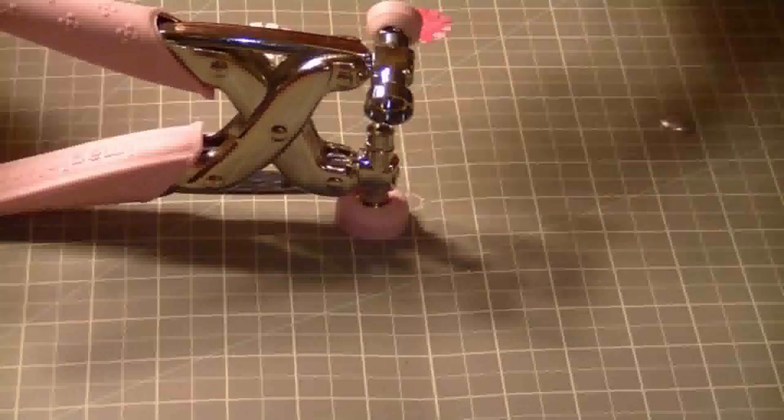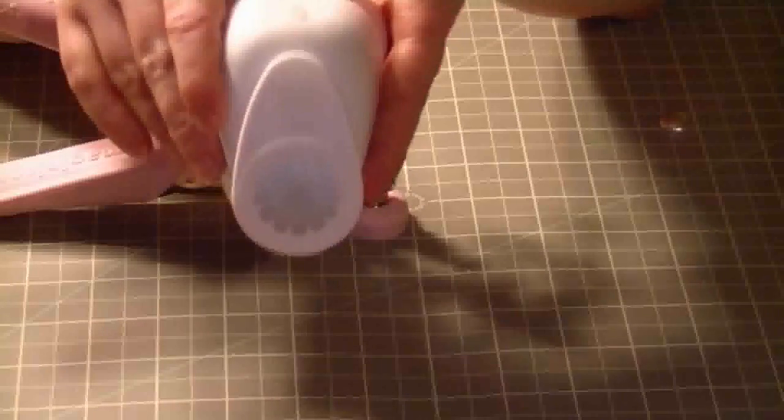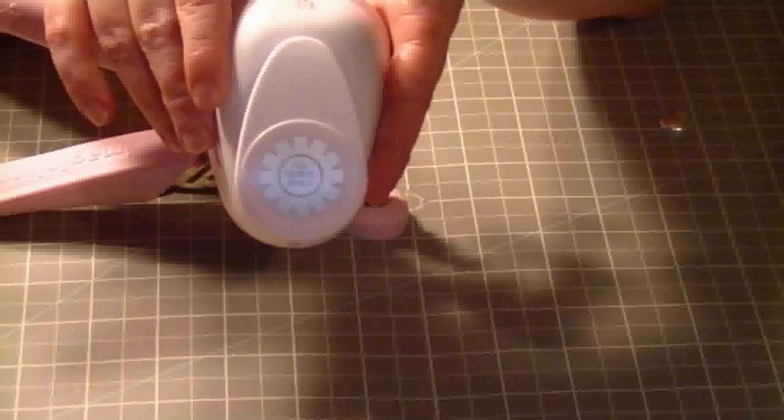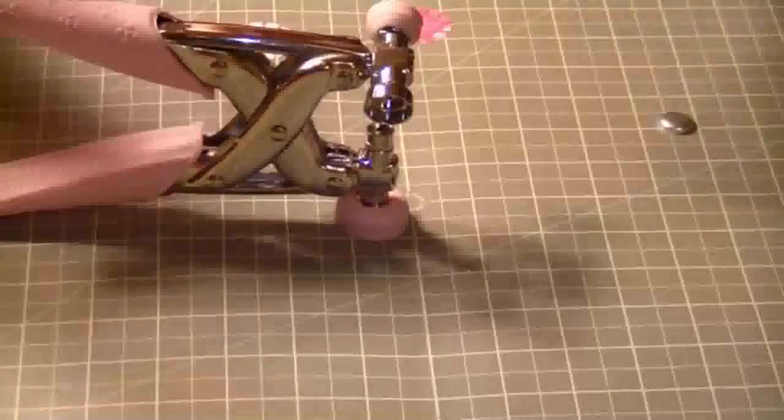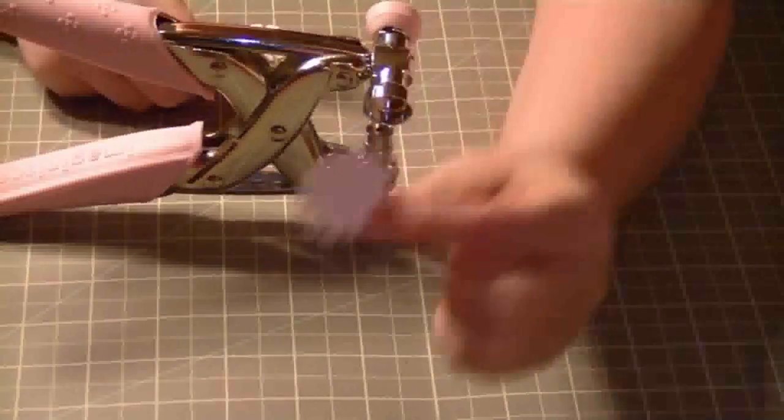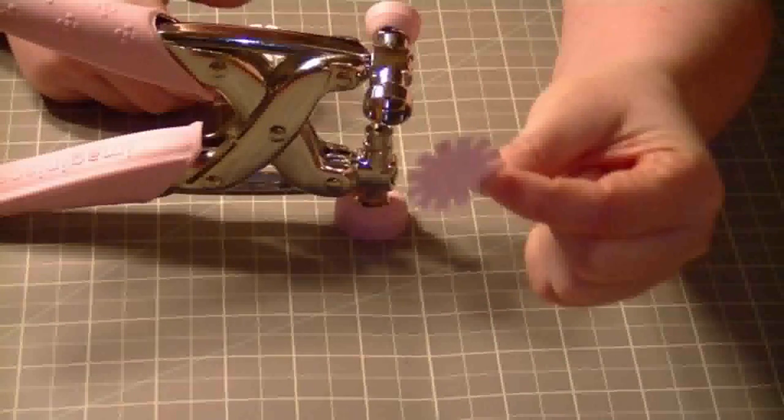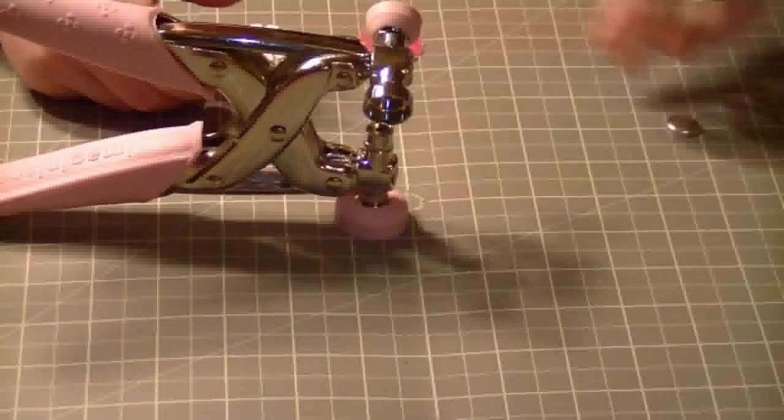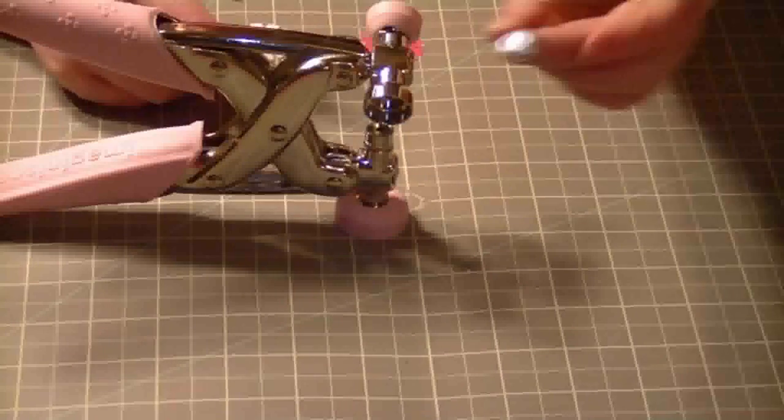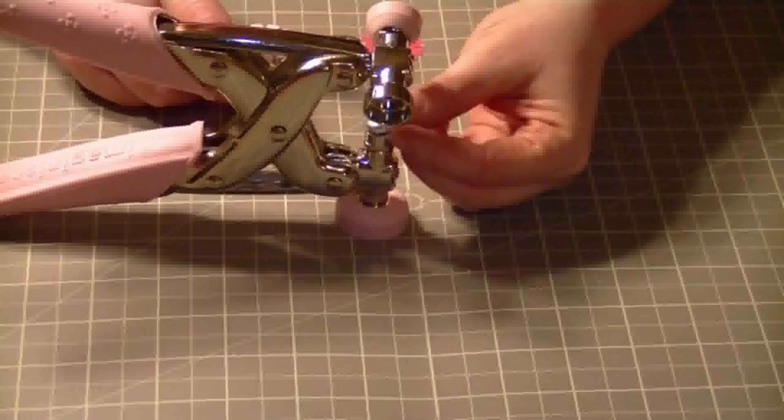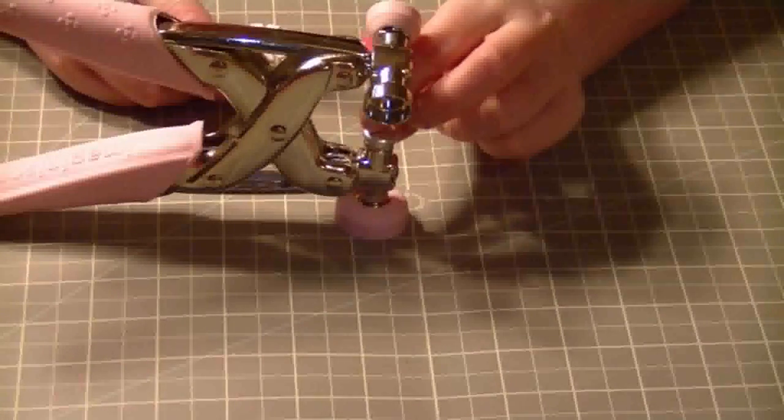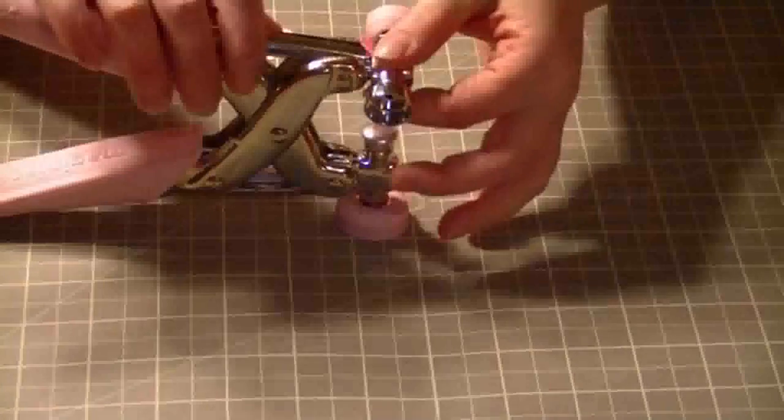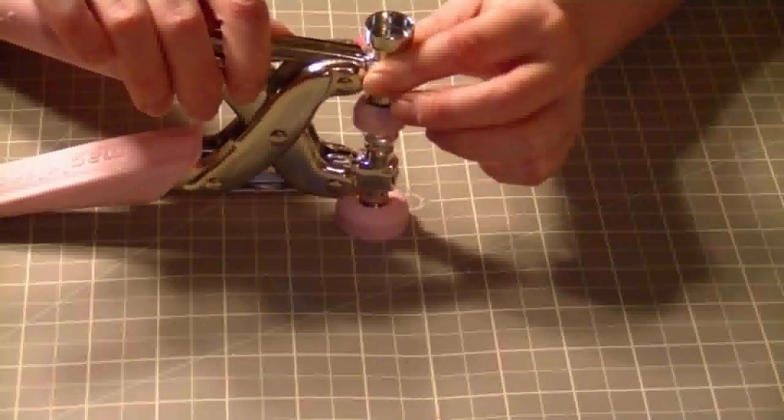So what I'm going to need is my 16mm punch to make my brad. I've already punched out a little piece for the brad. What I'm going to do is take the brad top and you're just going to put it in on the little metal part and make sure it's where you want it and then close it.